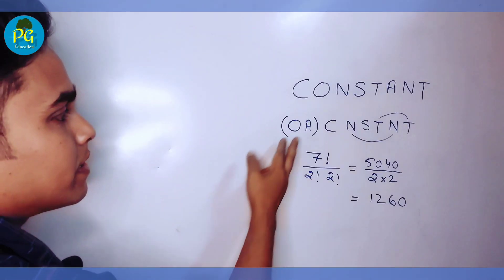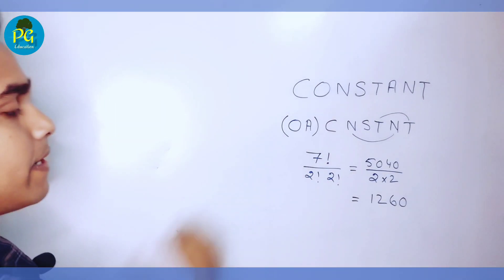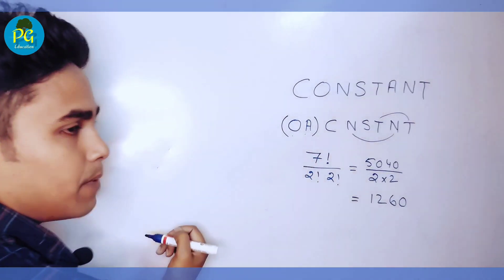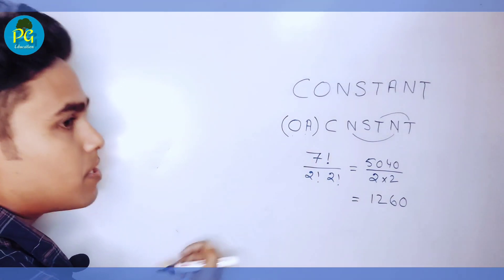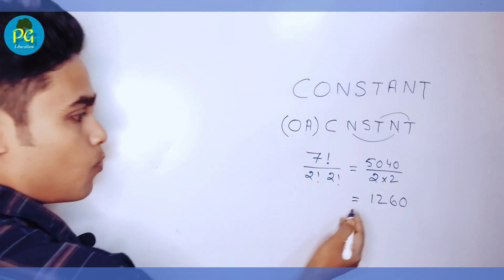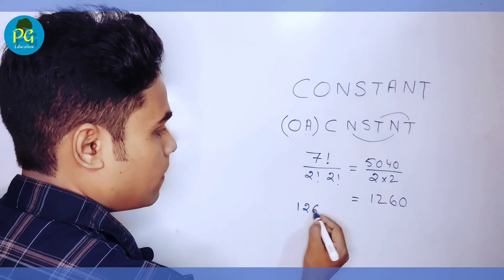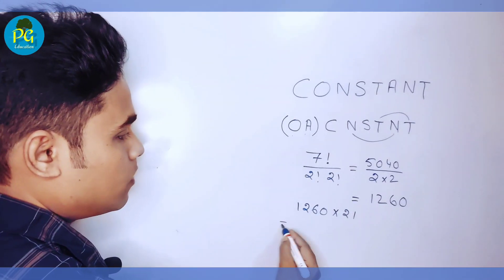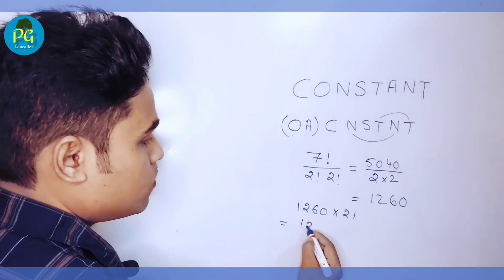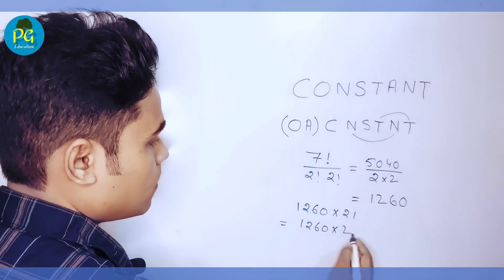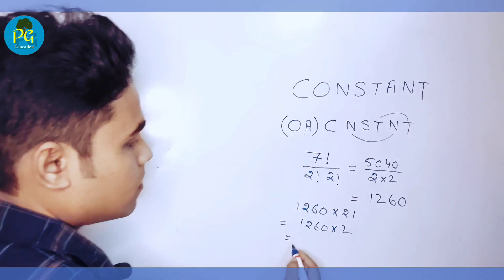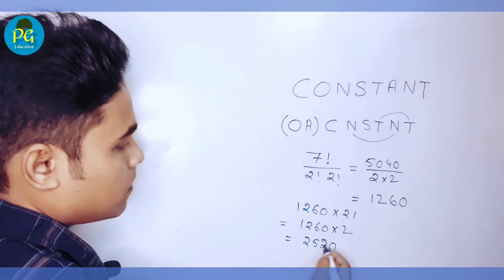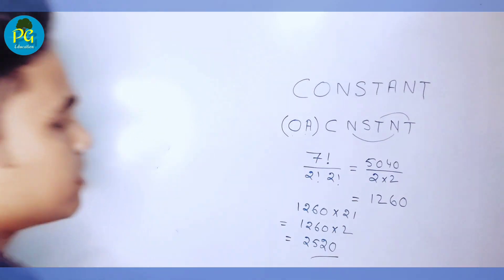Don't forget the arrangement of O and A among themselves. O and A can be arranged in 2 factorial = 2 ways. So the total is 1260 × 2 = 2520. This is the required answer.